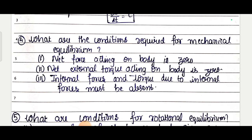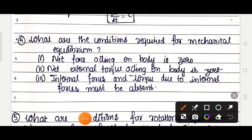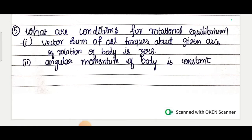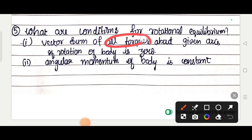Fourth question: What are the conditions required for mechanical equilibrium? First condition: net force acting on the body should be zero. Net external torque acting on the body is zero. Internal forces and torque due to internal forces must be absent. Next, what are the conditions for rotational equilibrium? Vector sum of all torques about the given axis of rotation is zero, and angular momentum of body is constant.